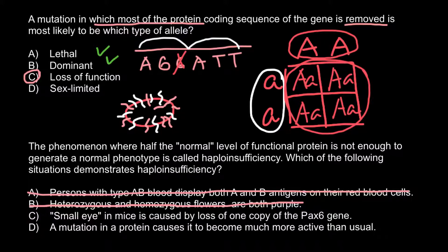Now we have to choose between answer C and D. Answer D: a mutation in a protein causes it to become much more active than usual. This answer contradicts our problem. The phenomenon of haploinsufficiency involves half the normal level of functional protein not being enough to generate a normal phenotype, but in answer D we see not deficiency but overproduction. So we can cross out this answer as well.